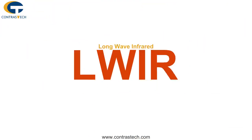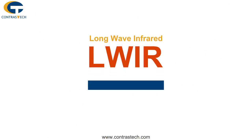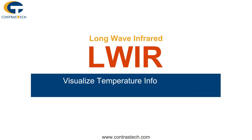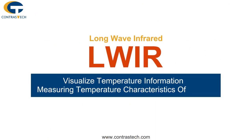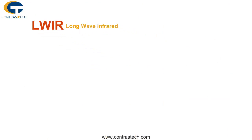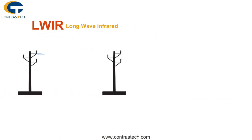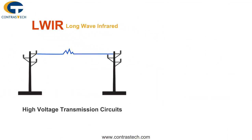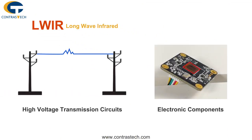Longwave Infrared (LWIR) cameras visualize temperature information and measure temperature characteristics of objects. They can detect many hidden dangers in advance by detecting infrared light that is invisible to humans and processing it with algorithms.